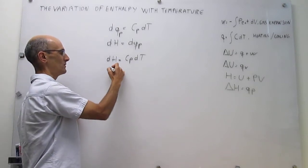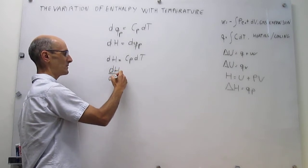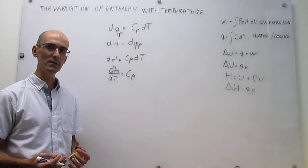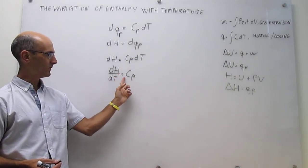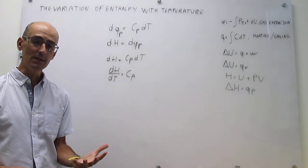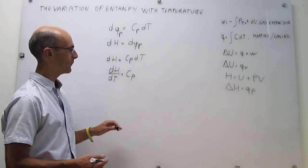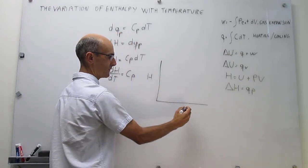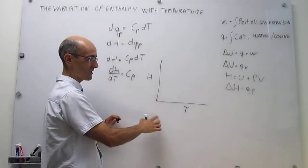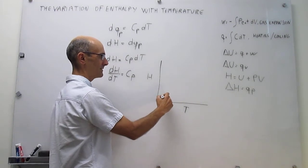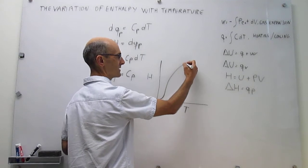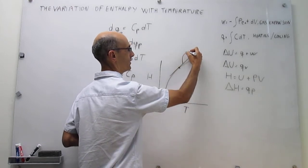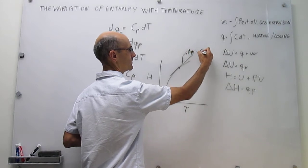If we rearrange that expression to take the first derivative of the enthalpy with respect to temperature, what we find is that this is just the heat capacity at constant pressure, Cp. The geometric meaning of the first derivative of a function with respect to a variable is the slope of a line tangent to the curve at the point you're interested in. So if we plot enthalpy versus temperature, it actually grows because the heat capacity is positive. The slope of the tangent at any point on that curve is equal to the heat capacity at constant pressure.